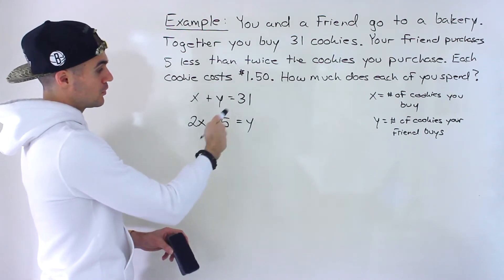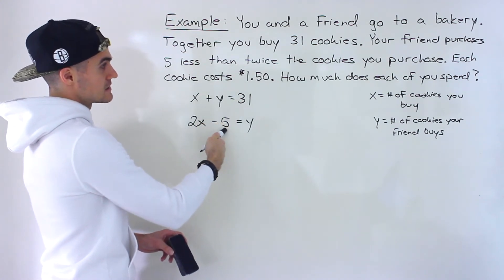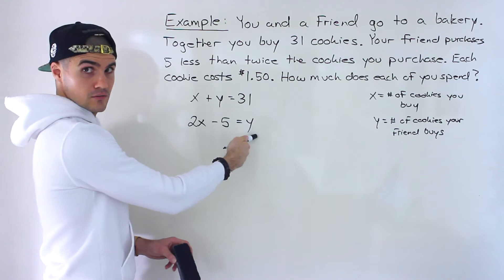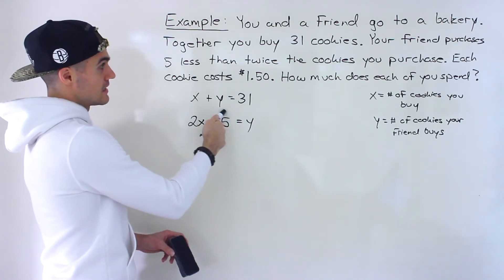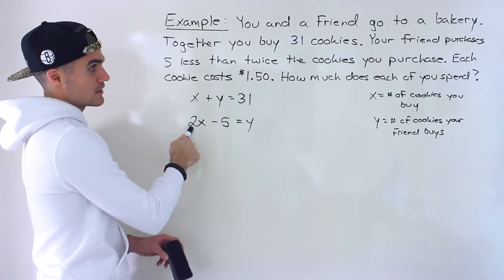All right, so one more time, your friend purchases five less. Your friend, right here, purchases five less than twice the amount of cookies that you purchase.